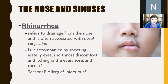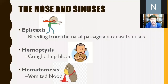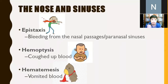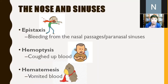You have to differentiate epistaxis, hemoptysis, and hematemesis. Epistaxis is bleeding from the nasal passages and paranasal sinuses — you must trace the source because bleeding from the nose can pass to the back of the pharynx and exit through the mouth. Hemoptysis is coughing up of blood, originating from the respiratory tract. Hematemesis is vomiting of blood, originating from the gastrointestinal tract.